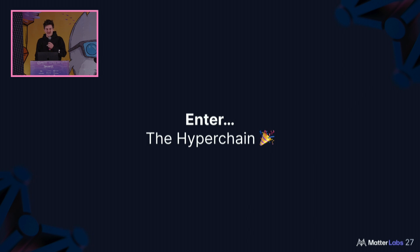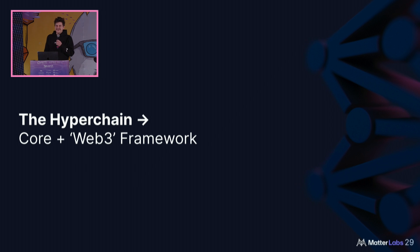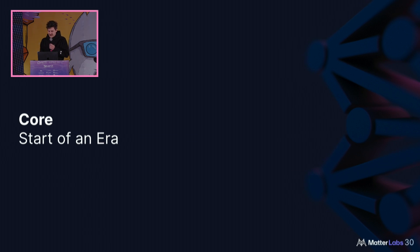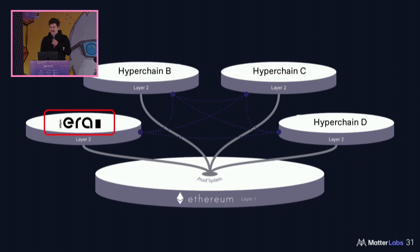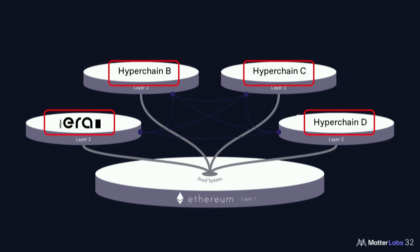We came up with a concept called the HyperChain. ZK is the end game — we'll get back to this. The HyperChain essentially consists of two different layers: one is the core, and one is a framework that ties those cores together. ERA is actually an L2 that was built on the technologies of our core. Every single HyperChain can leverage those same core innovations. Anything that is done on ERA benefits literally every single other HyperChain.